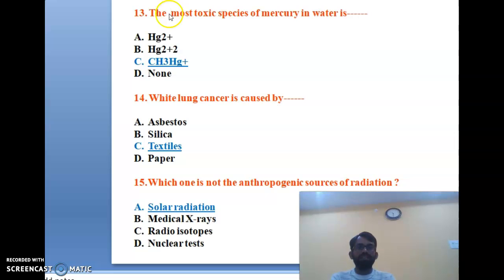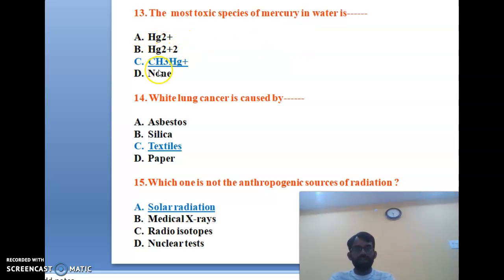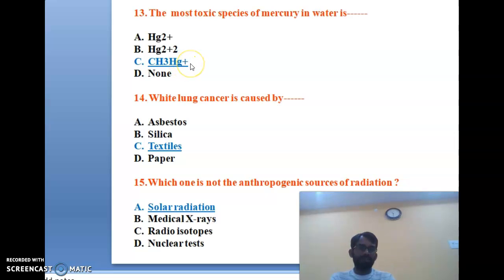The thirteenth question: the most toxic species of mercury in water is Hg²⁺, Hg₂²⁺, CH₃Hg⁺, or none? The most toxic species of mercury is CH₃Hg⁺ (methylmercury). The correct answer is C.